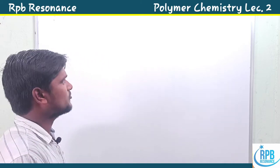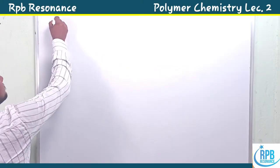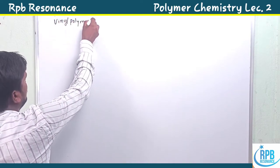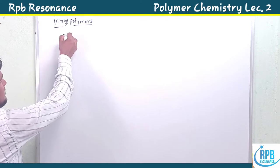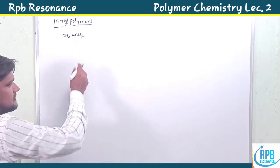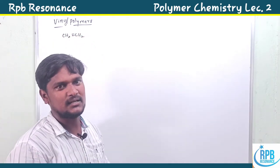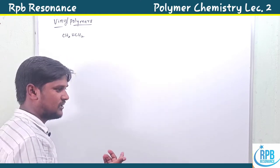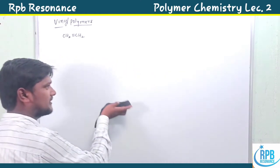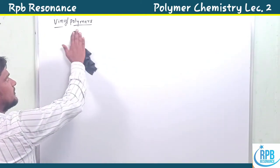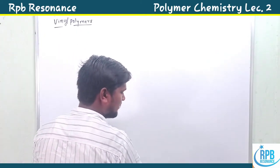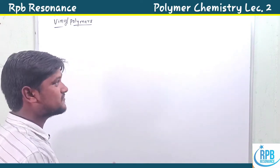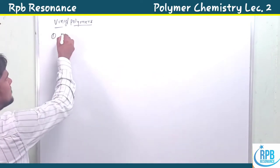Today our class is only on vinyl polymers. Vinyl is nothing but ethylene, and there are plenty of vinyl polymers: polythene, polyvinyl chloride, polyacrylate, polymethyl methacrylate, and others. Let us discuss these vinyl polymers one by one. The first one is very simple — that is nothing but polythene.